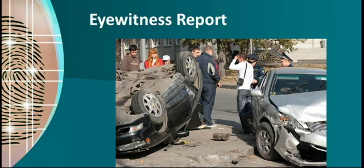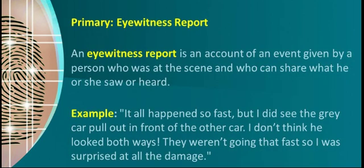Primary: Eyewitness Report. An eyewitness report is an account of an event given by a person who was at the scene and who can share what he or she saw or heard. Example: "It all happened so fast. But I did see the gray car pull out in front of the other car. I don't think he looked both ways. They weren't going that fast so I was surprised at all the damage."